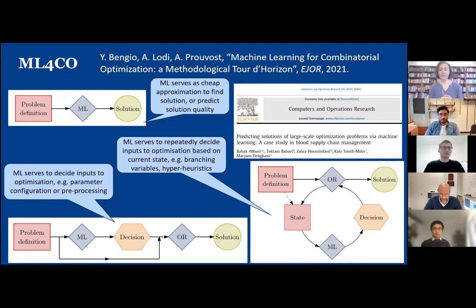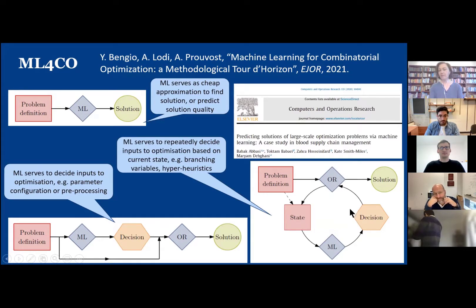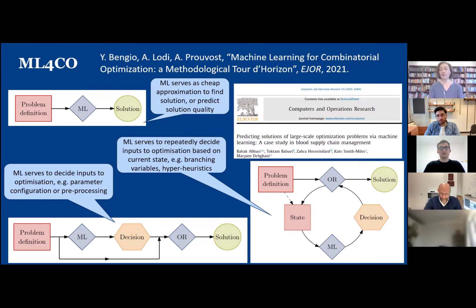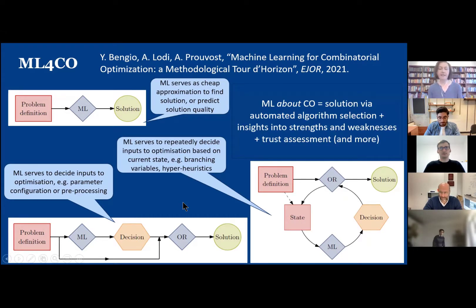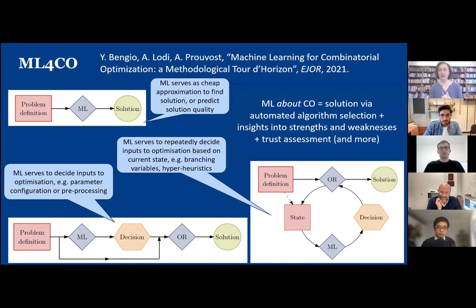The third approach is more of an iterative process throughout the running of the optimization algorithm, where depending on the current state, you repeatedly use the same machine learning model to make predictions to support decision making — whether that's deciding the branching variables or, in a hyper-heuristic sense, which operators to use at each point in time. So that's machine learning for combinatorial optimization, where it's serving the role of helping the optimization algorithm deliver a solution. What I want to talk about today is where machine learning can do more than that.